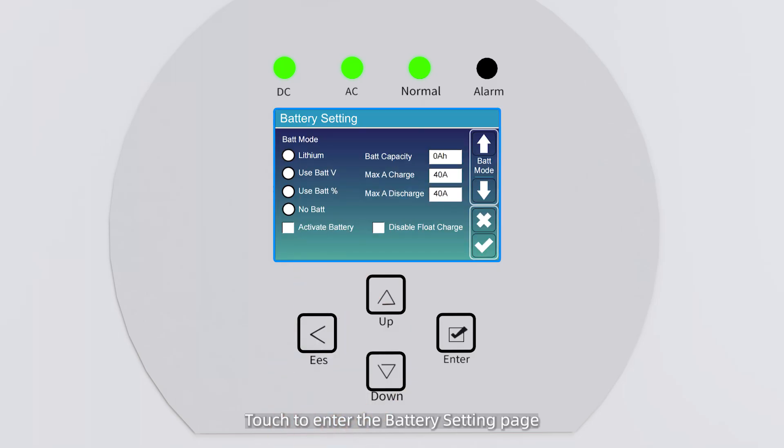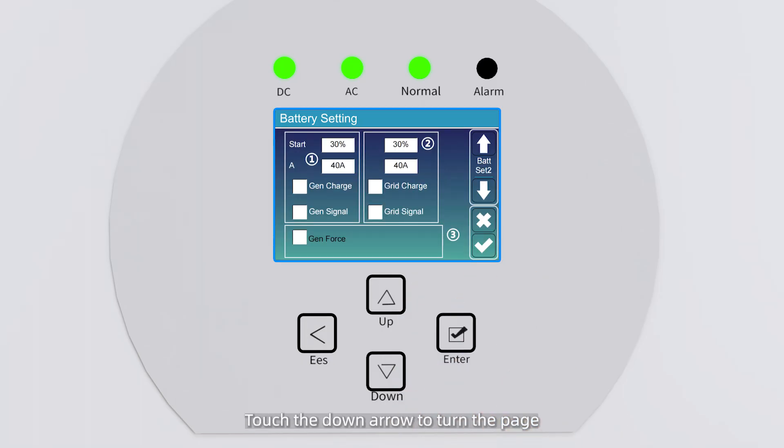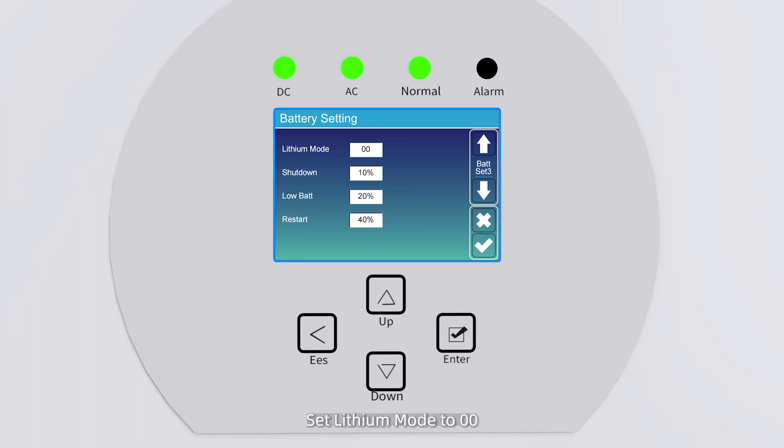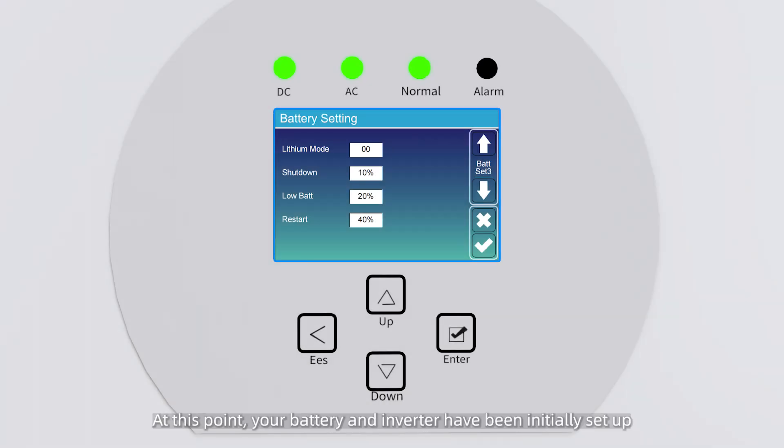Touch to enter the battery setting page. Select the Lithium mode and enter your total battery capacity. Touch the down arrow to turn the page. Set Lithium mode to 00. At this point, your battery and inverter have been initially set up.